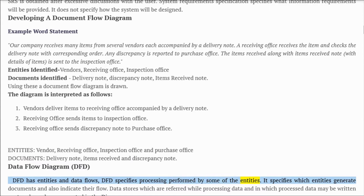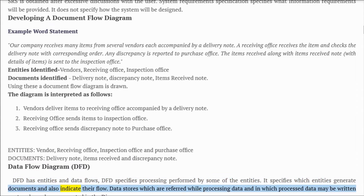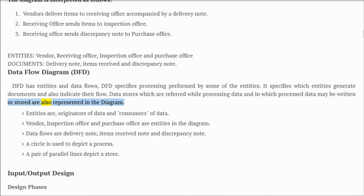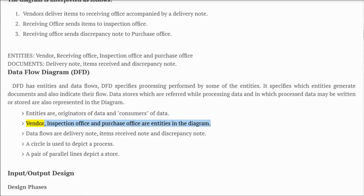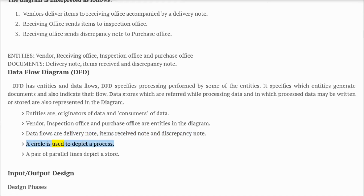Data Flow Diagram (DFD): DFD has entities and data flows. DFD specifies processing performed by some entities, specifies which entities generate documents, and indicates their flow. Data stores — referred to while processing data, and in which processed data may be written or stored — are also represented. Entities are originators and consumers of data. Data flows include delivery note, items received note, and discrepancy note.